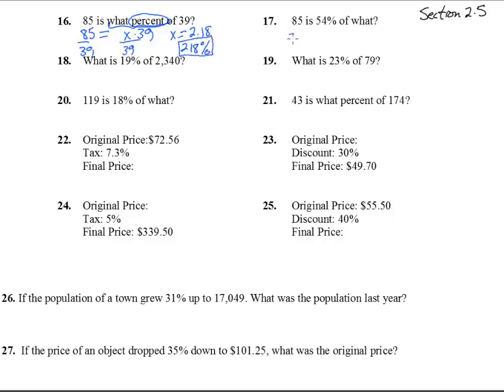Number 17, 85 is 54%, that's a .54, of what? There's my x right there. This becomes an equation, it's one step, we can divide by .54, and we get 157.4.